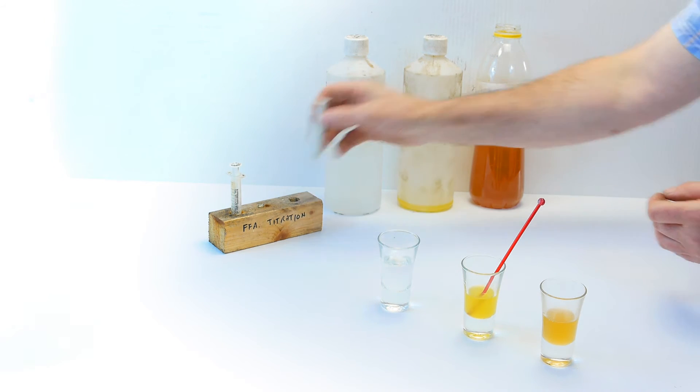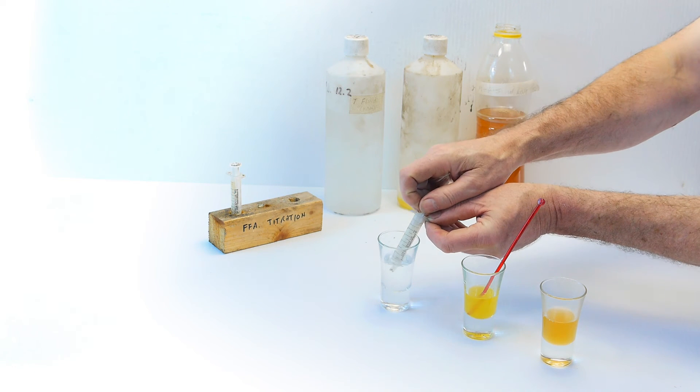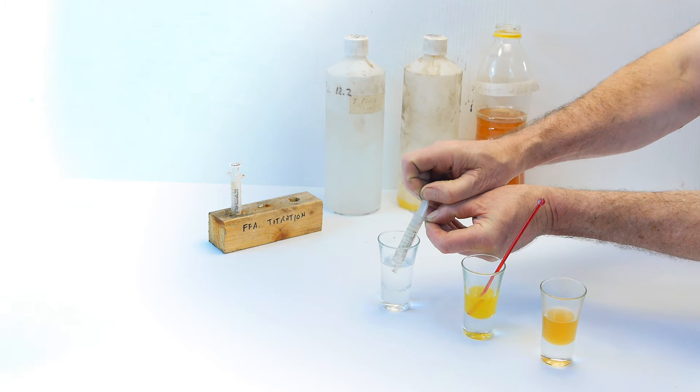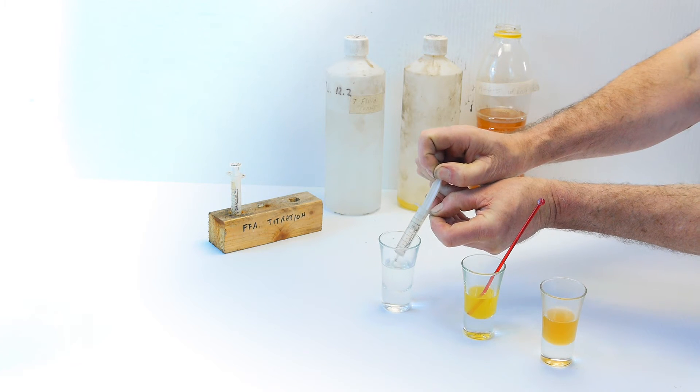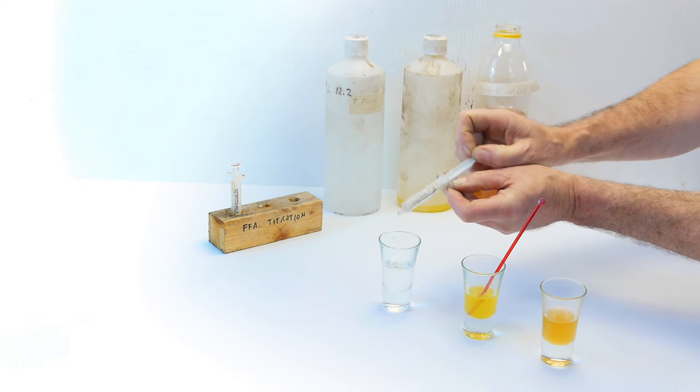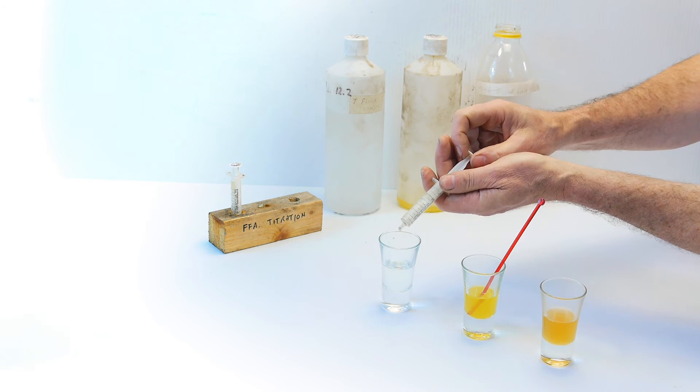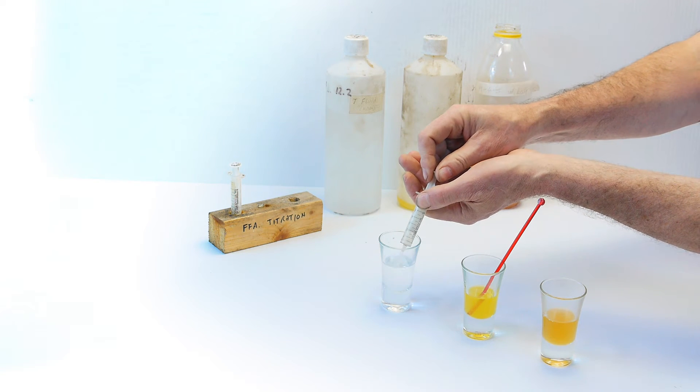Now, fill the other syringe, the syringe marked T, with titration fluid. Fill it right up to the five mill mark. Make sure there's no air in the syringe and that it is properly full to the five mill mark.